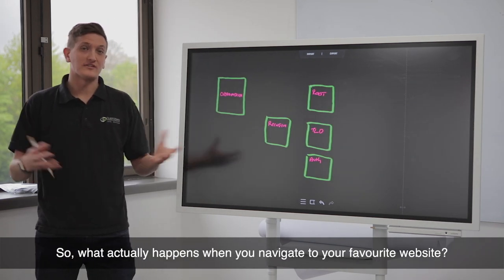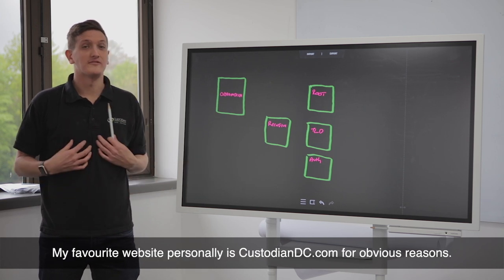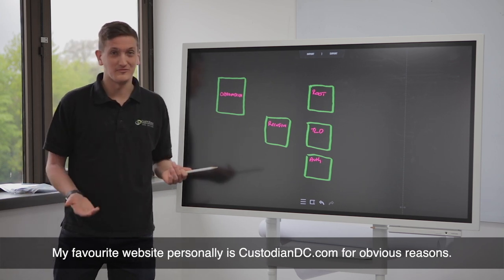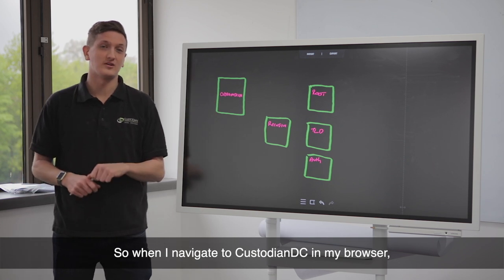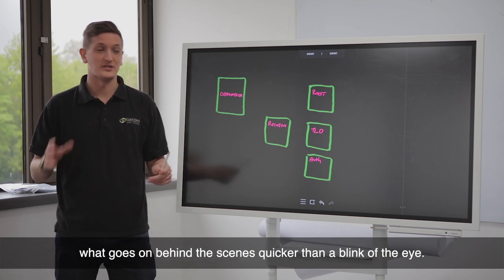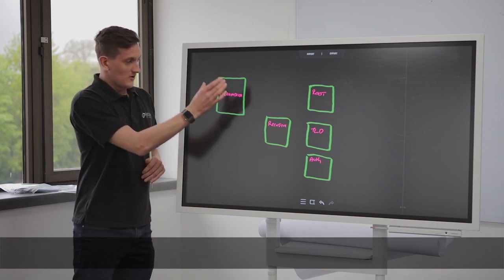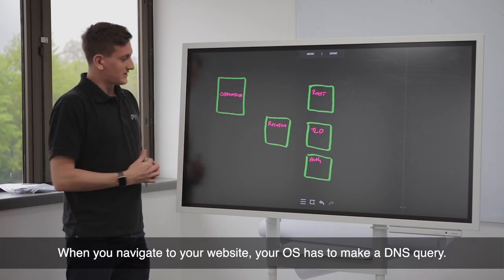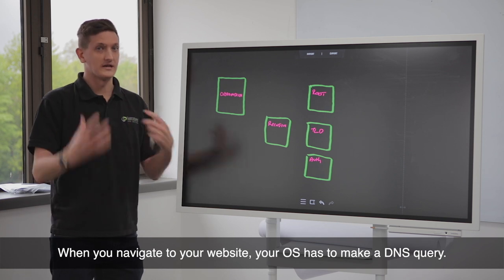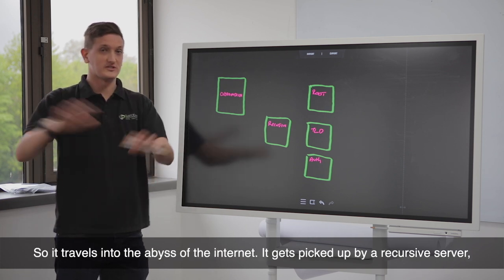So what actually happens when you navigate to your favorite website? My favorite website personally is custodiandc.com for obvious reasons. When I navigate to custodiandc.com in my browser, what goes on behind the scenes quicker than a blink of the eye? That's what I'm going to explain to you. When you navigate to your website, your operating system has to make a DNS query that travels into the abyss of the internet.